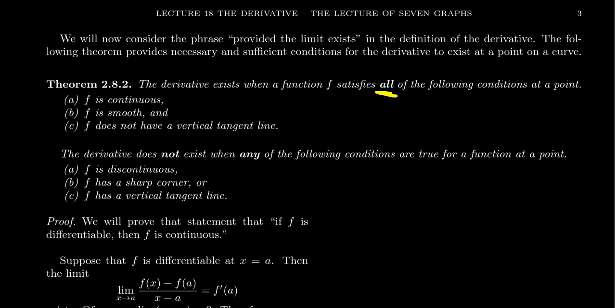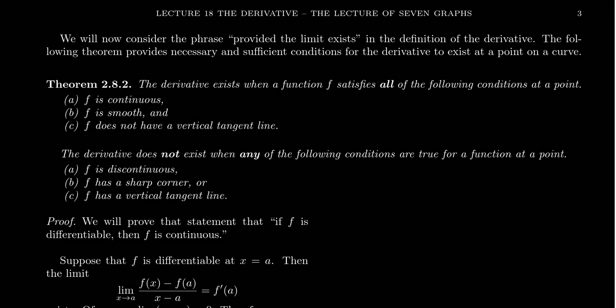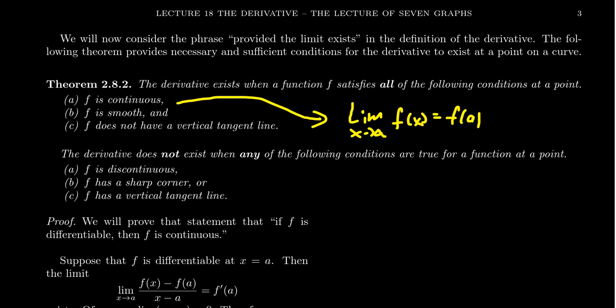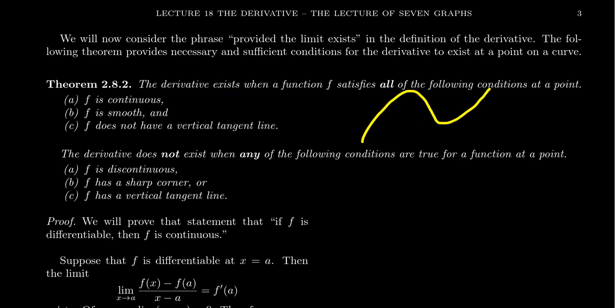If these three things happen, that means the function is continuous at that point. The first condition is that the function has to be continuous. A function is continuous if it's defined at that point — if the point is undefined, then of course there can't be a tangent line there. Second, the limit at that point has to exist. Most importantly, continuity means that the limit as x approaches a of f(x) is equal to f(a). A function is continuous at x = a if the limit equals the function value — that is, the function behaves according to what you would expect. Continuous functions are those we can draw with one continuous stroke of our pen.